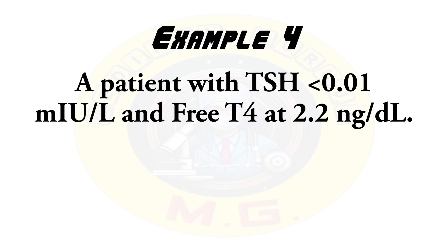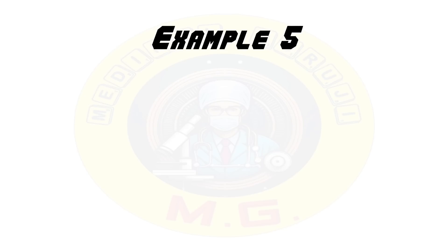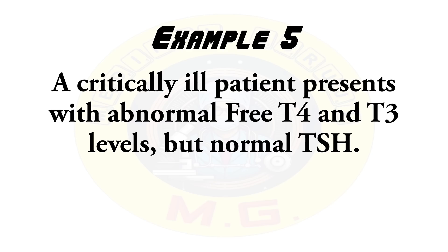Next example: a patient with TSH less than 0.01 milli-international units per litre and free T4 at 2.2 nanogram per deciliter. This is a case of overt hyperthyroidism, likely requiring antithyroid medications or other interventions.